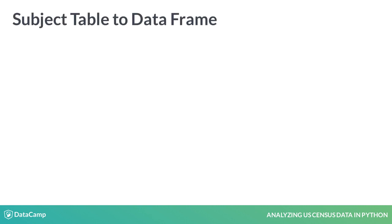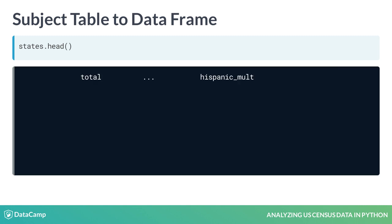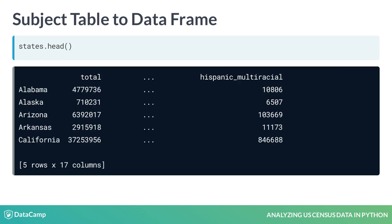We've created a pandas DataFrame named states with data from table P5. You can examine the first few rows with states.head. Each row is a state in the US. The variable codes have been replaced with descriptive column names, and the state name appears as the row index.